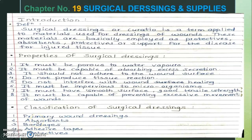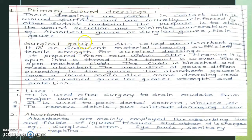The classification of surgical dressings is divided into five subgroups: primary wound dressings, absorbents, bandages, adhesive tapes, and protectives. Primary wound dressings are placed in contact with the wound surface and are usually reinforced by other suitable materials. Their purpose is to absorb wound secretions and minimize abrasions. Examples include absorption gauze and surgical gauze.